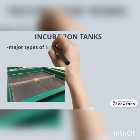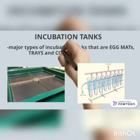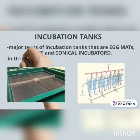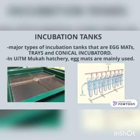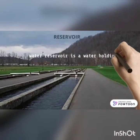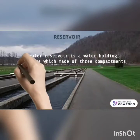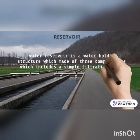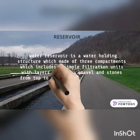Incubation Tanks. There are three major types of incubation tanks: egg mats, trays, and conical incubators. At UITM Mukah, egg mats are mainly used. The water reservoir is a water-holding structure made of three compartments, which includes filtration units with layers of sand, gravel, and stones from top to bottom for good filtration.